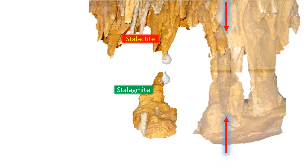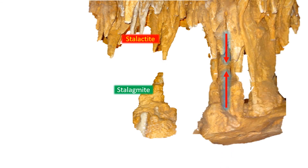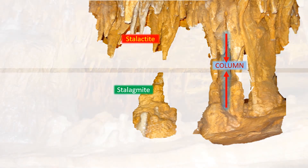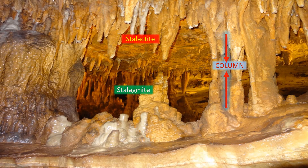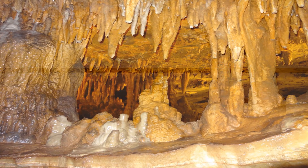When stalactites and stalagmites meet, they form a pillar or column. Deposits can also be found on the walls of caves.